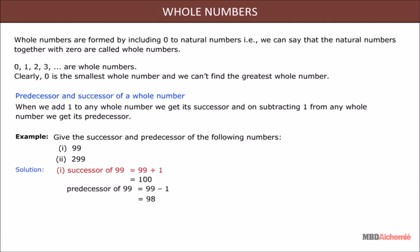Solution: the successor of 99 is equal to 99 + 1 = 100. The predecessor of 99 is equal to 99 − 1 = 98. The successor of 299 is equal to 299 + 1 = 300. The predecessor of 299 is equal to 299 − 1 = 298.